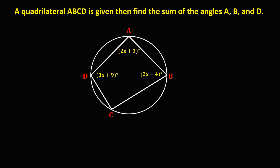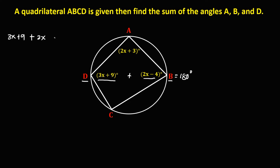Since in a quadrilateral the sum of opposite angles is equal to 180 degrees, angle D plus angle B is equal to 180 degrees. So for angle D we have 3x plus 9, then plus angle B, that's 2x minus 4, then equals 180. Simplify — combine like terms.